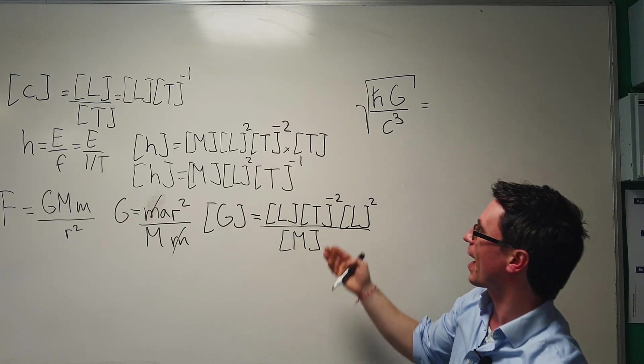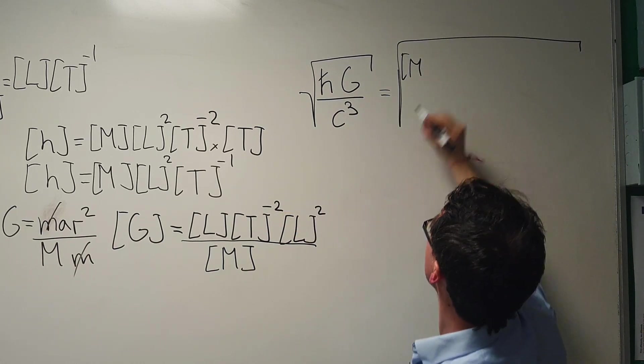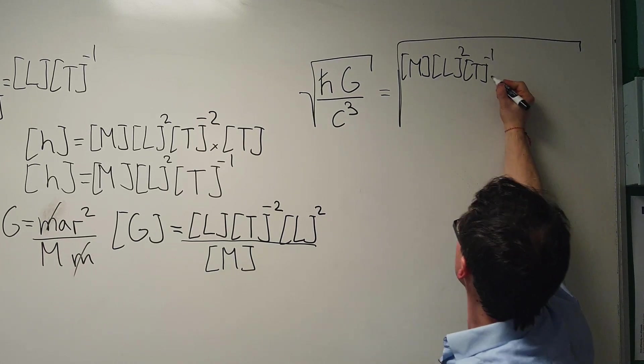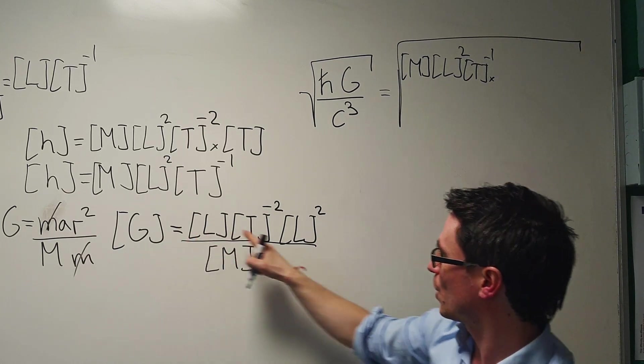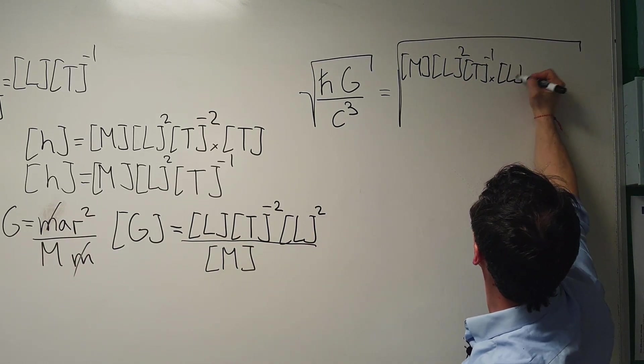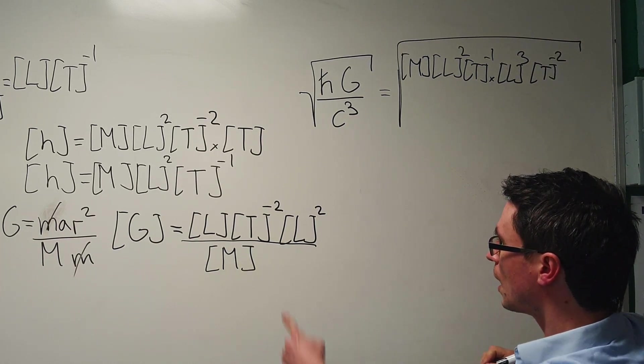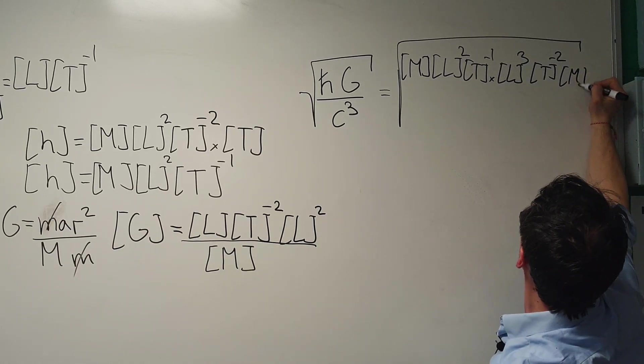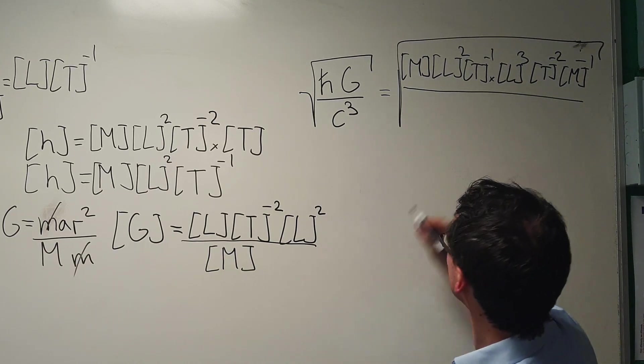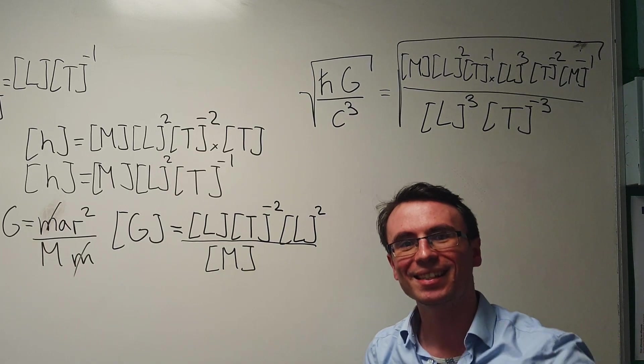So H bar will have the same units as H, which are just here. So we're going to have the square root of the units for M times the units of L squared times T to the power of minus one, multiplied by the units of G. And the units of G are just here. So we have L times L squared. That's going to give us L to the power of three. So L to the power of three times T to the power of minus two, or dimensions of T to the power of minus two. Then we have a factor of M to the power of minus one. So M to the power of minus one, right over here at the end. And now we need to divide by the dimensions of the speed of light cubed, which are just L cubed T to the power of minus three.